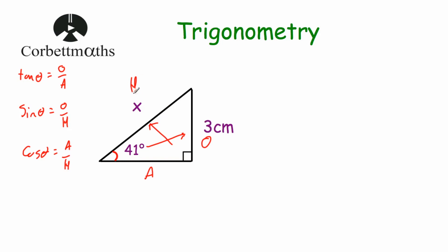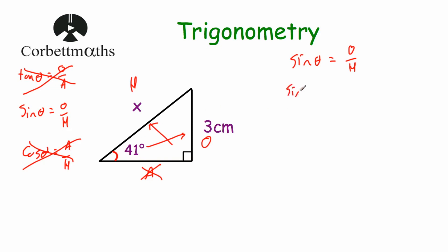In this question we're trying to find the hypotenuse and we've been given the opposite, so we're using the hypotenuse and the opposite. We're not trying to find the adjacent, so we cross that off — meaning we cross off tan and cos. We're going to be using sine. Sin eta equals opposite over hypotenuse. Substituting values: sin(41) = 3 divided by x.